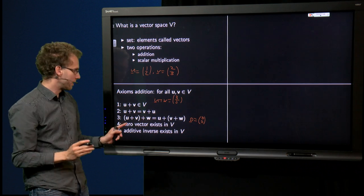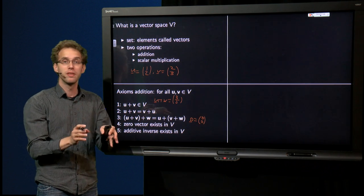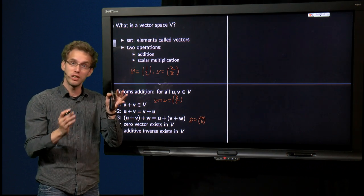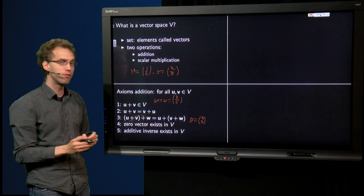And we need an additive inverse. That means that if you have a u, there needs to be another vector, which we will call minus u, such that u plus minus u yields a zero vector.